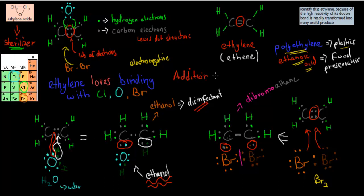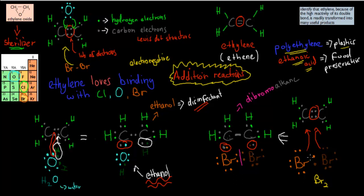All of these are examples of addition reactions. An addition reaction is a way that we can make new products by adding something to the double bond without actually losing anything else. In the case of bromide, the bromides were added to the carbons — nothing was lost, only things were added. So if only things are added, it's called an addition reaction.